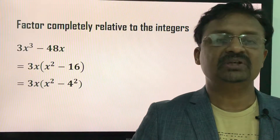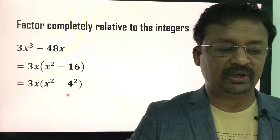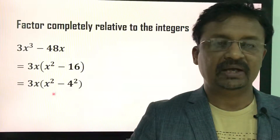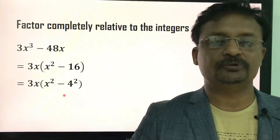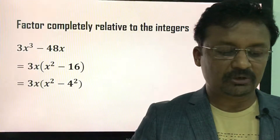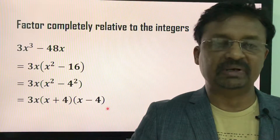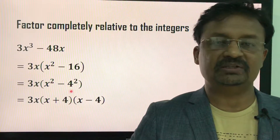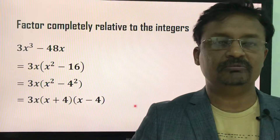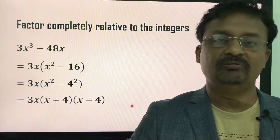After taking out 3x, the remaining becomes x² - 16. Now 16 can be written as 4², giving 3x(x² - 4²). I can factorize x² - 4² using the a² - b² formula, which gives 3x(x + 4)(x - 4). Here a is x and b is 4. This is a simple example of complete factoring using factoring formulas.